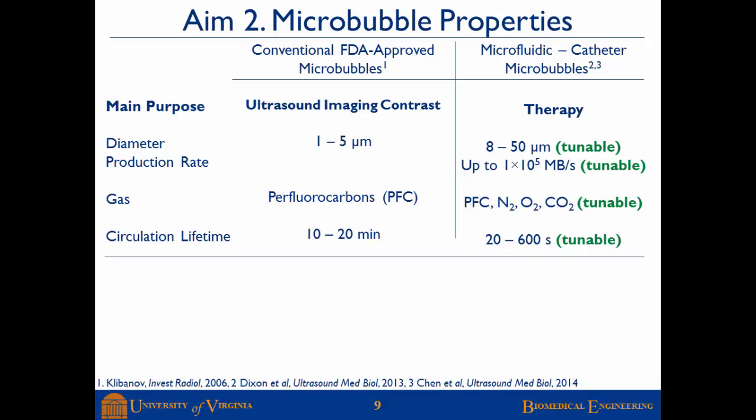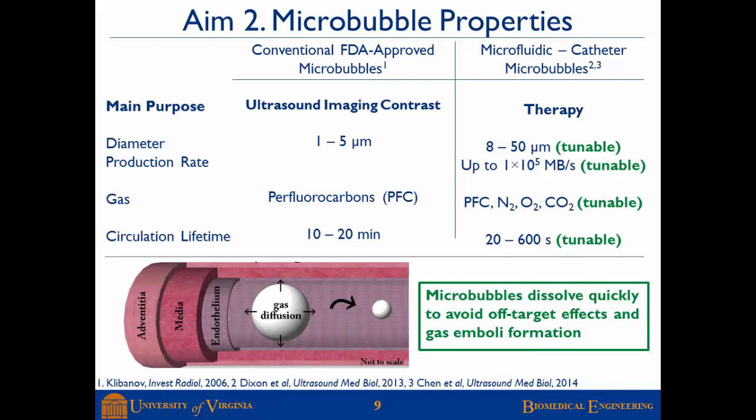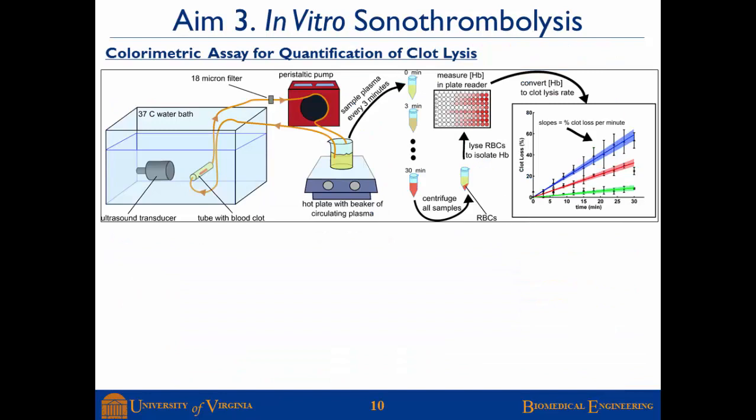Because we use a microfluidic device, we can select our gas and thereby tune the bubble lifetime. A high solubility gas like carbon dioxide produces a bubble that lasts a very short time, while standard perfluorocarbons produce a bubble that lasts much longer. The concept is to produce a large microbubble directly in the occluded blood vessel — therapeutically active while large, producing larger bio-effects — and then rely on gas diffusion so the bubble shrinks, mitigating the risk of gas embolism formation downstream.